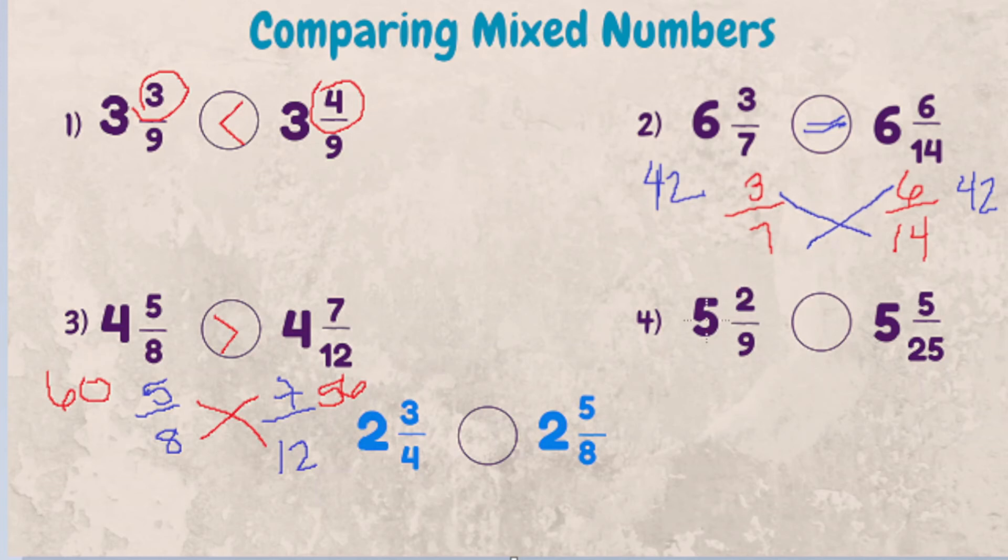Last example. Five and two ninths compared to five and five twenty-fifths. Whole numbers are the same. Denominators are different. So let's write our proper fraction portion. Two times twenty-five is fifty. Nine times five is forty-five. Fifty is greater than forty-five, so five and two ninths is greater than five and five twenty-fifths.